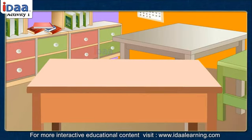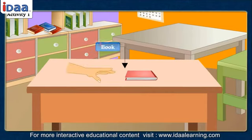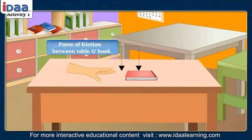Let us perform an activity. Take a book. Place it on the table. Give a gentle blow on it through your hand. What do you observe? The book moves a little and then stops. Why? This is because friction occurs between the book and the surface of the table, where the surface of the table opposes the movement of the book.